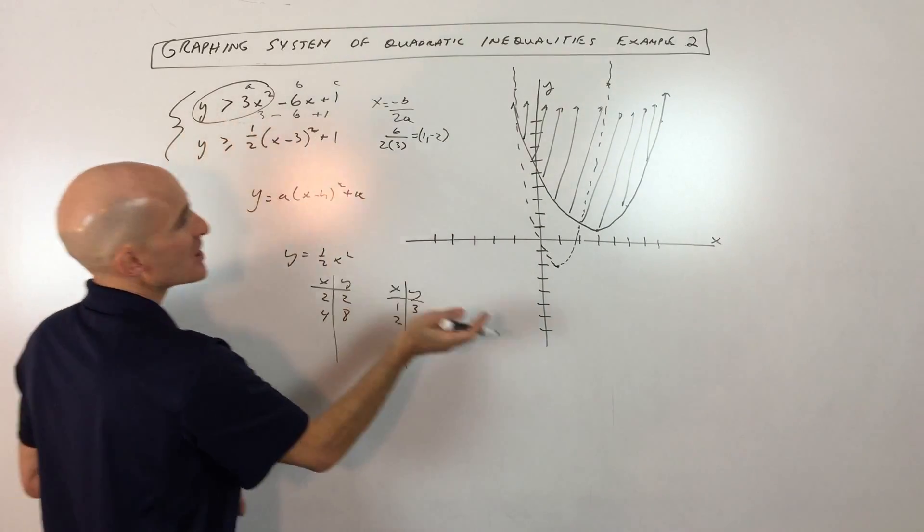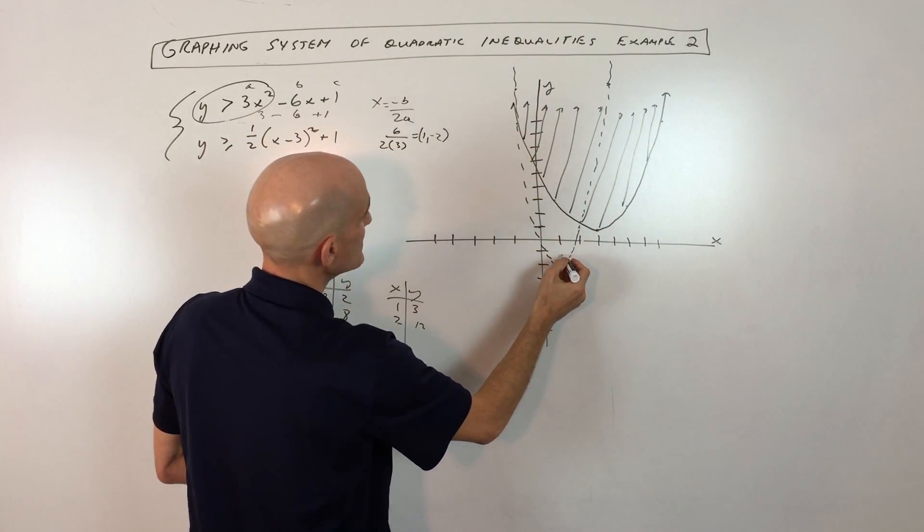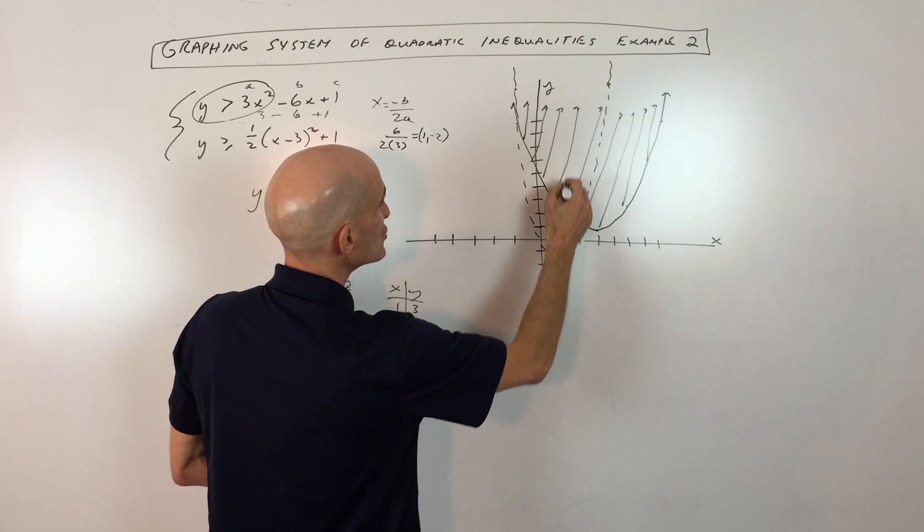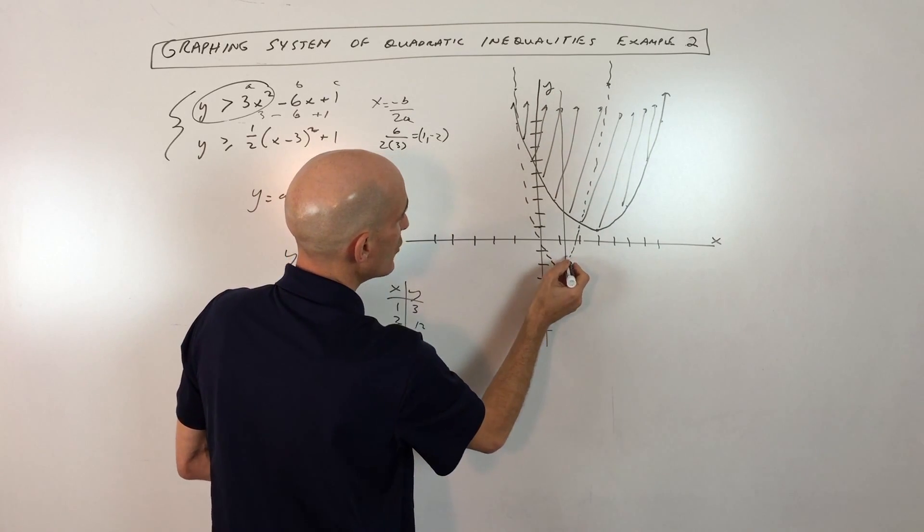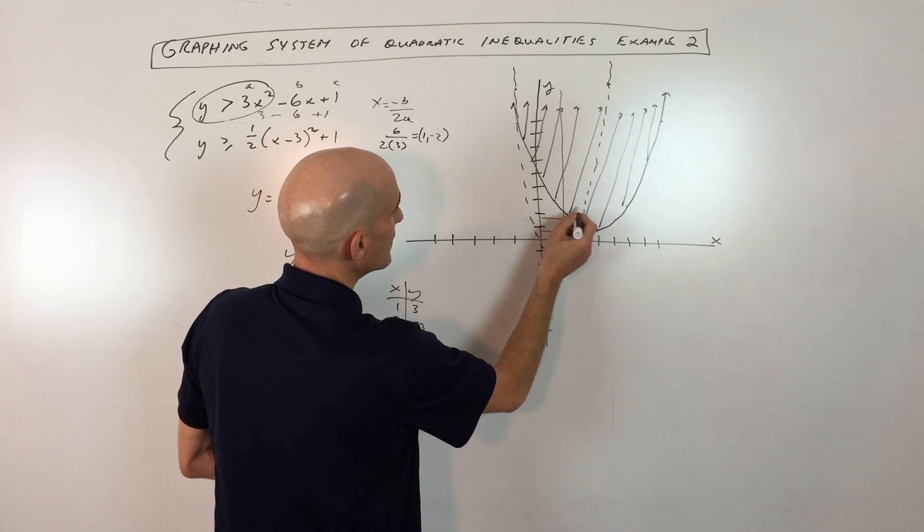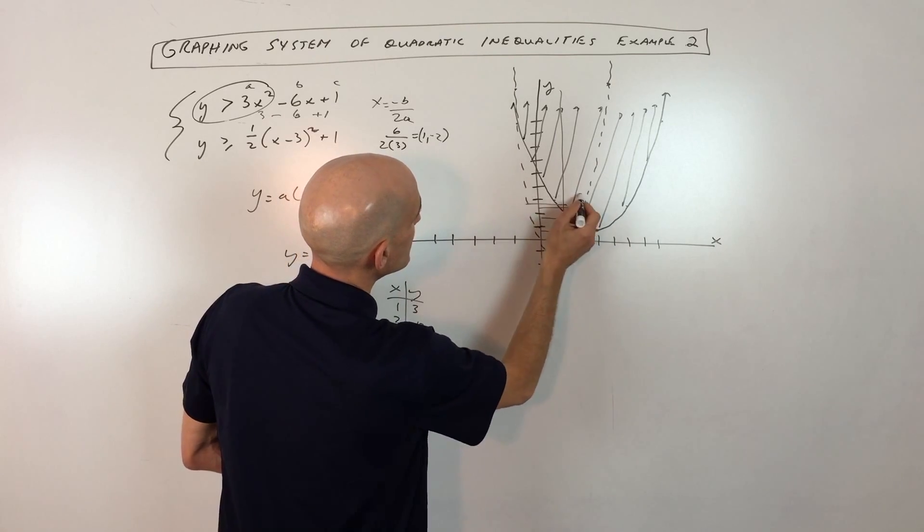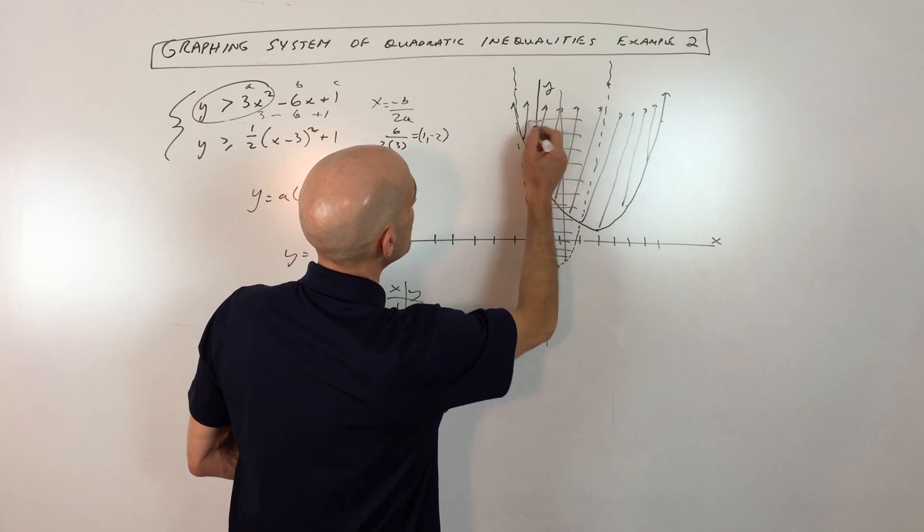Now, greater than means we're shading above. So above means that I'm going to be shading any point on the graph, I'm going to be shading straight up, like this. But in this case, I'm just going to draw the lines this way, just to help us to visualize it a little bit better.